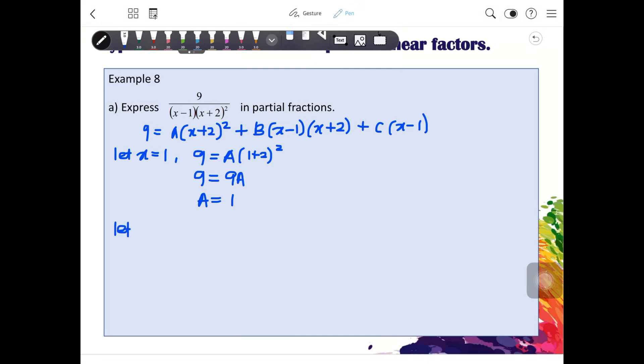The next root is, let x to be negative 2. So, I will have 9. And the good thing is, here will be 0. And here will be 0. Only left C for us. So, we have C, negative 2, minus 1. C, negative 3C. C will be negative 3.